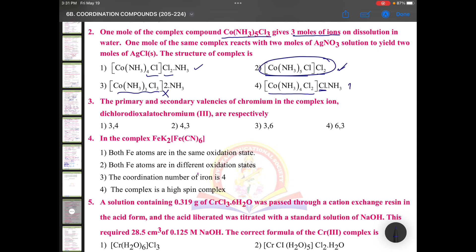So only one ion is going to form here. Two ions are possible in this case as well as in this case. Second point: here you see cobalt is with four ammonias and one chloride.